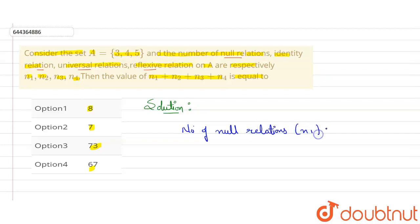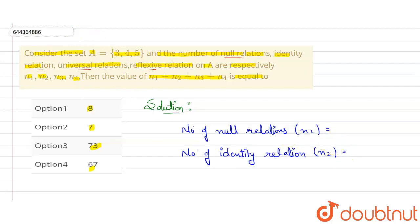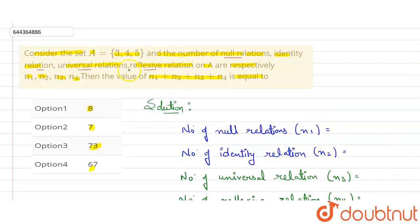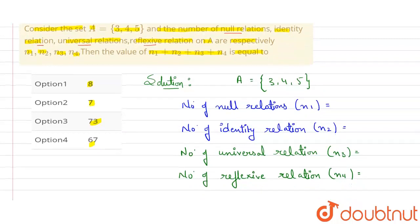So let's write: number of null relations is represented by N1, number of identity relations is represented by N2, number of universal relations is represented by N3, and number of reflexive relations is represented by N4. The set A equals {3, 4, 5}, so we need to find each and every relation.